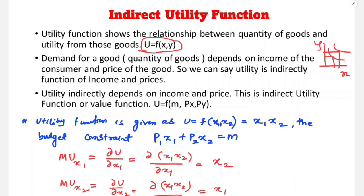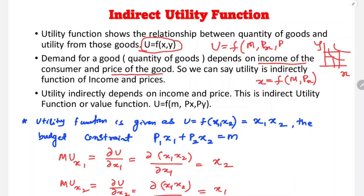The quantity of goods depends on the income of the consumer and the price of X. So the quantity of X depends on the money income of the consumer and the price of X. Indirectly, U is a function of X and Y, and X is a function of M and Px. So U is a function of money income, price of X, and price of Y.